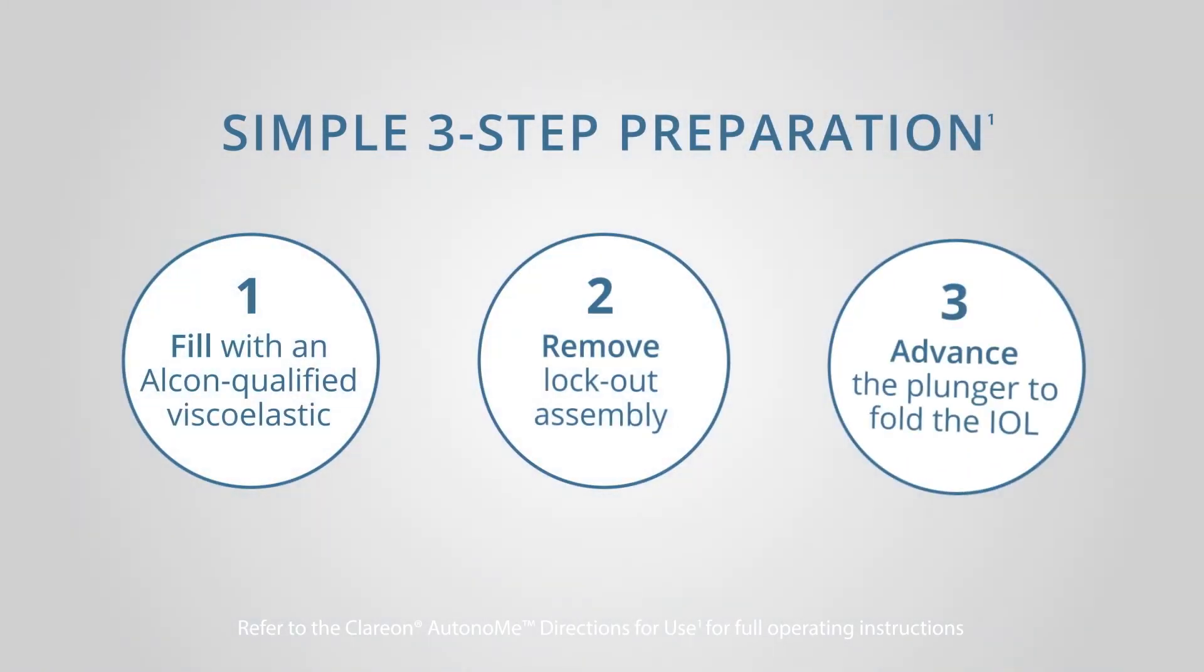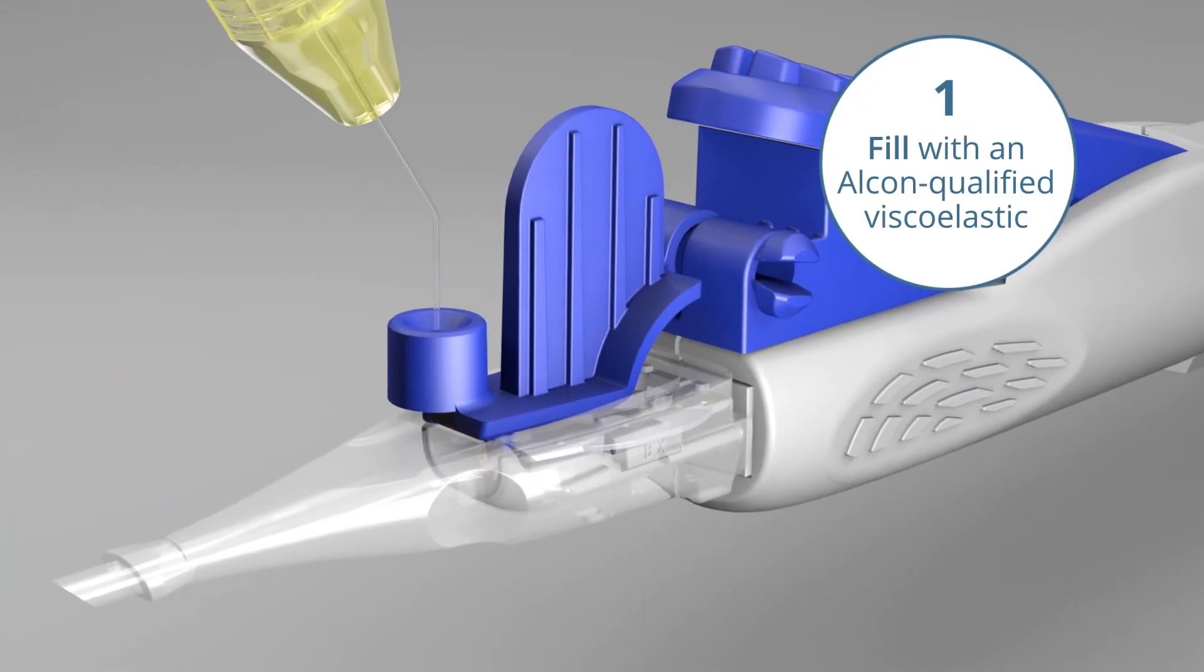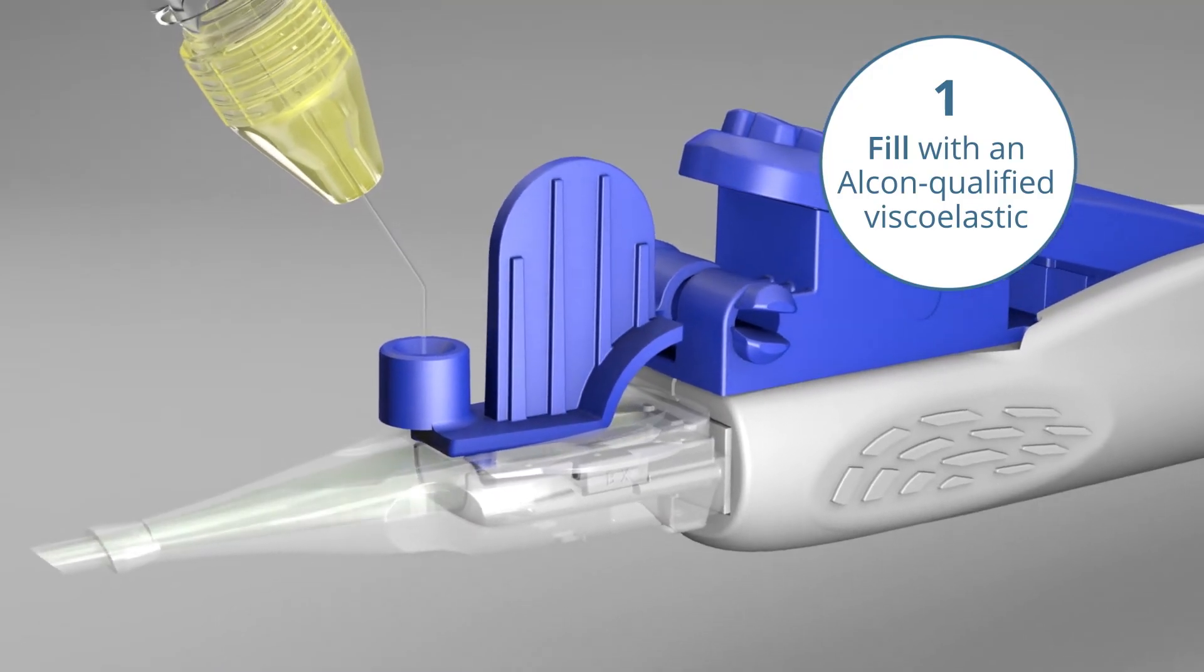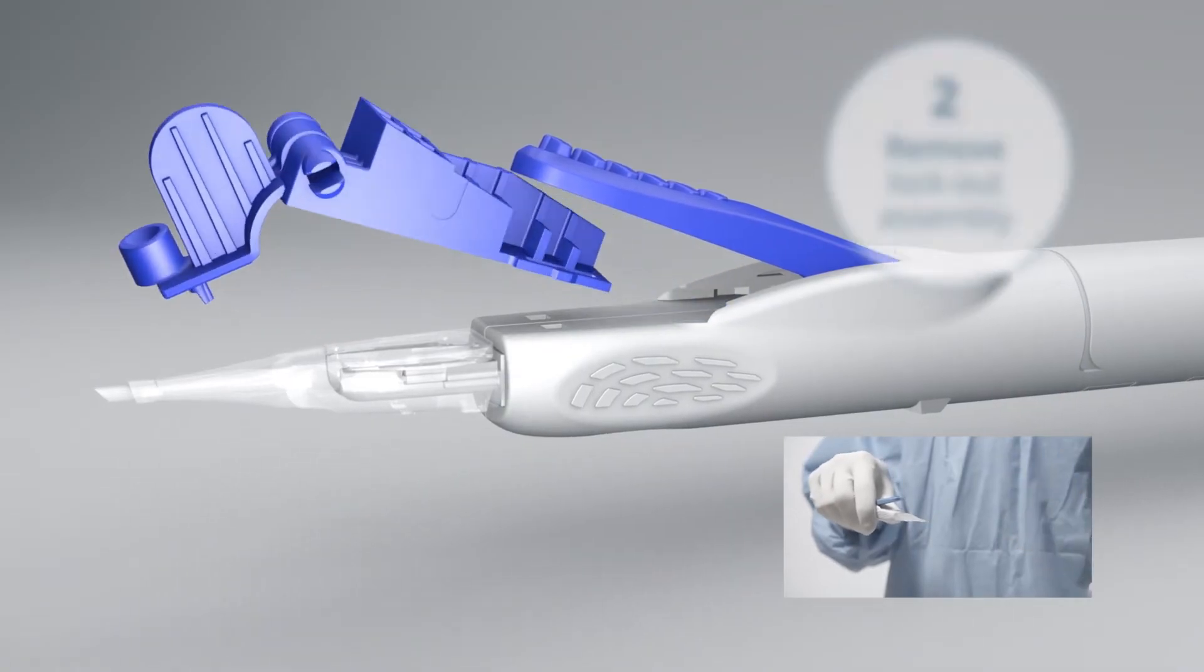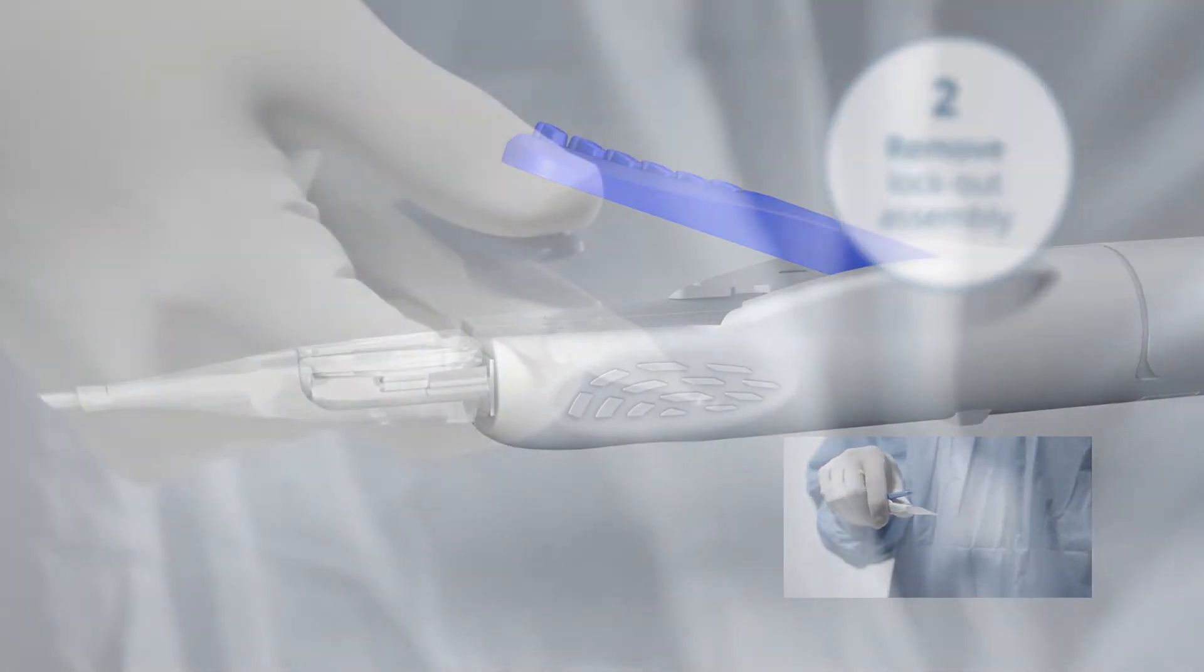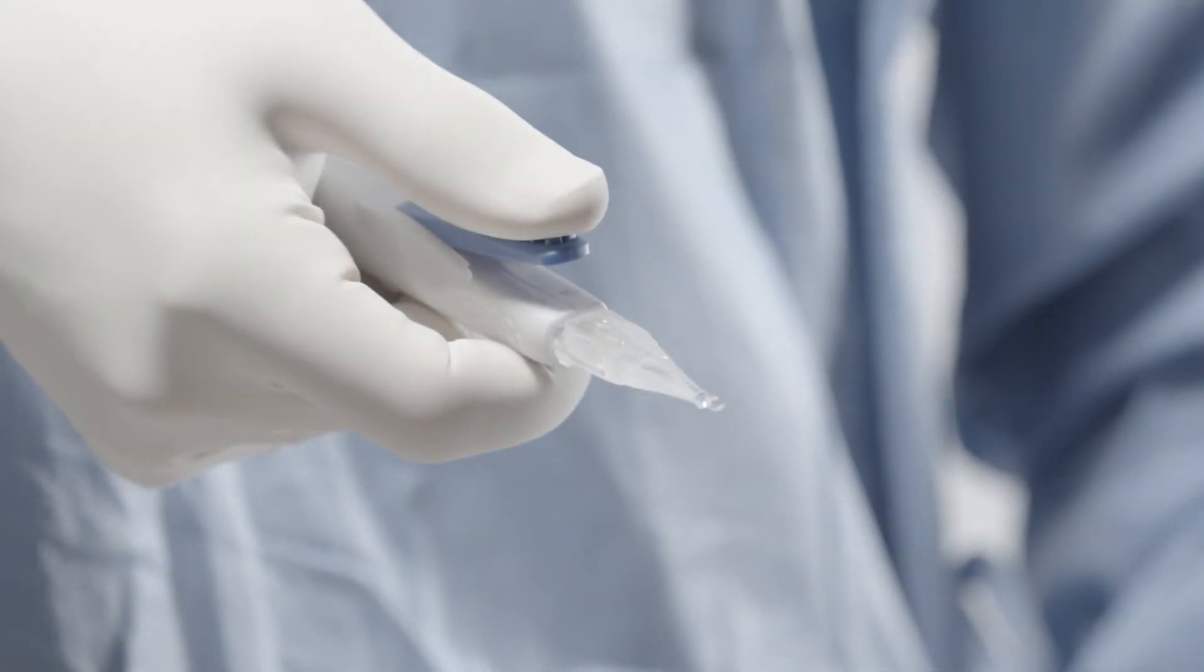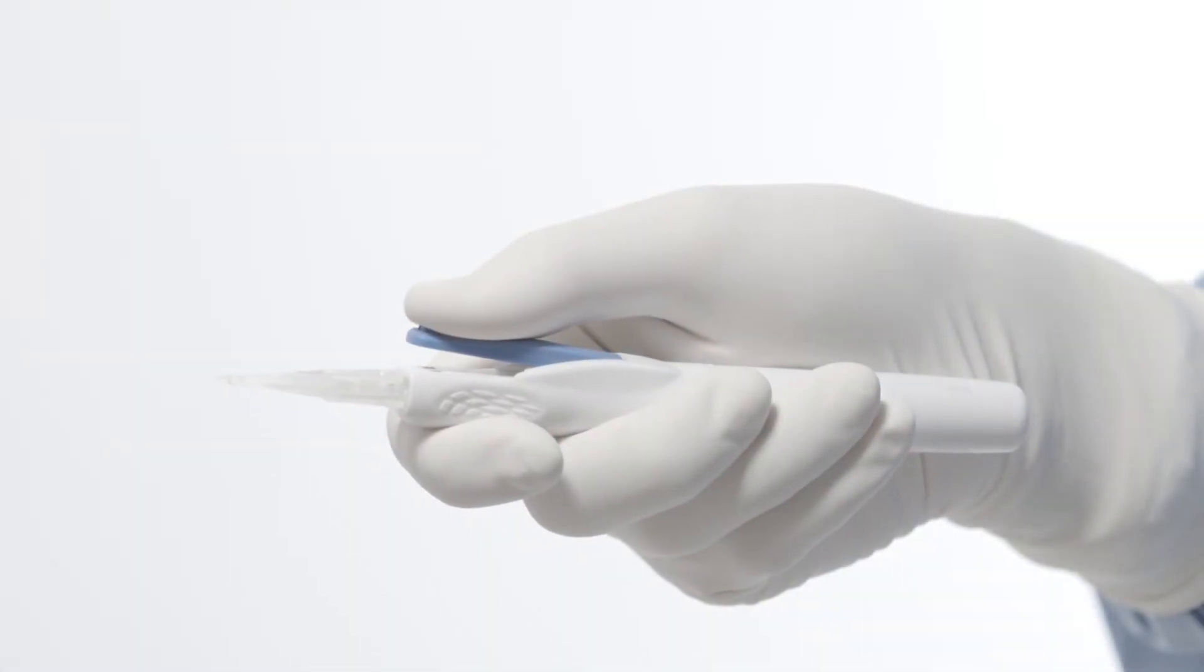Preparing the device is simple. It's ready to implant in just three steps. First, fill the lens cartridge with an Alcon qualified viscoelastic all the way to the nozzle tip and remove the lockout assembly.